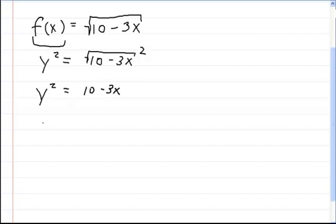And now let's move over the 10. Actually, you know what? Better yet, instead of doing that, let's make it easier on ourselves. And let's shift over the 3x to this side. And then let's just move the y squared over here. So you're going to get 3x is equal to 10 minus y squared.